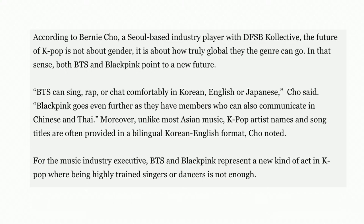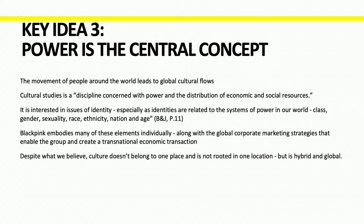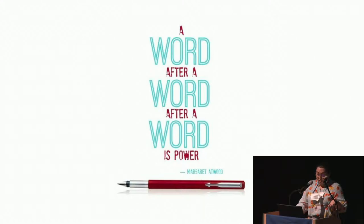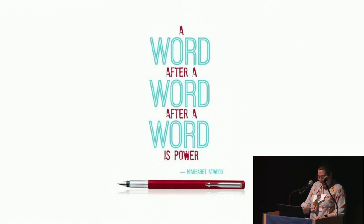Globalisation is something you might talk about in other classes like economics or geography, but global cultural flows are also important in the English classroom. This might show up in texts that have been translated, or texts where the author is from an immigrant background — these things influence the way English is used and how content is discussed. Through acts like Blackpink and BTS, something perceived as local became incredibly hybrid and truly global, which is the source of their incredible success and in no small part responsible for the growth in Korean words in the Oxford English Dictionary.